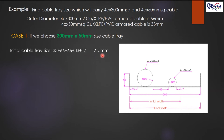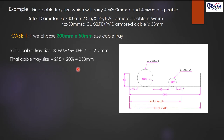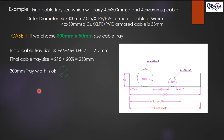Adding all initial values: 33 + 66 + 66 + 33 + 17 = 215 mm. Adding 20 percent extra: 215 + 20% = 258 mm. This width is not a standard market size, so we select the next bigger available size, which is 300 mm. Therefore, the 300 mm width is confirmed as acceptable.